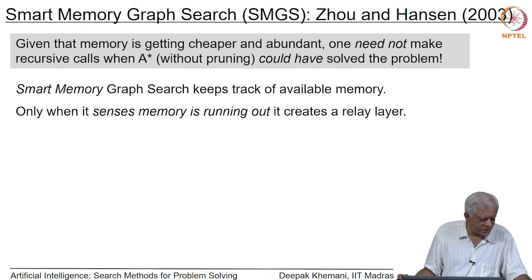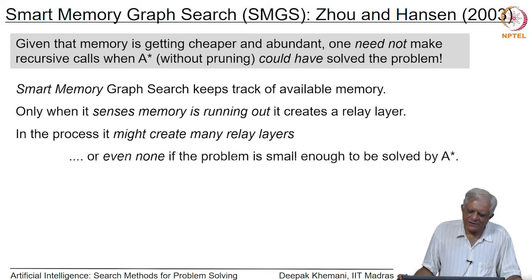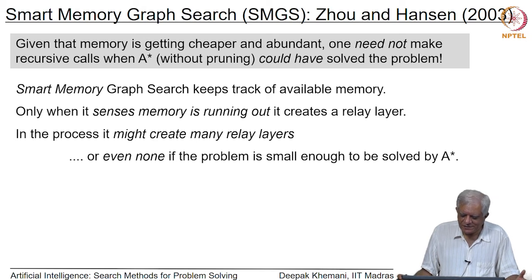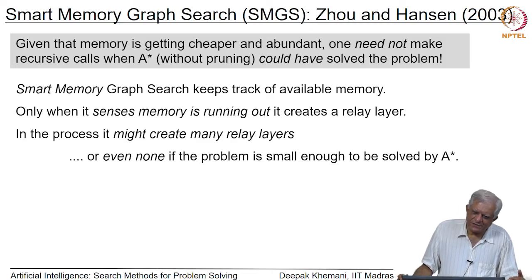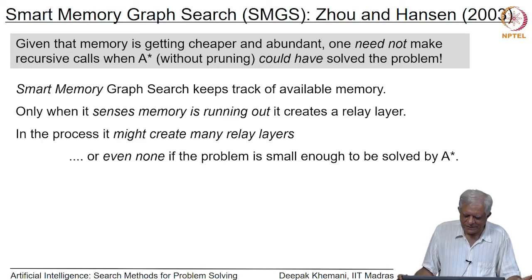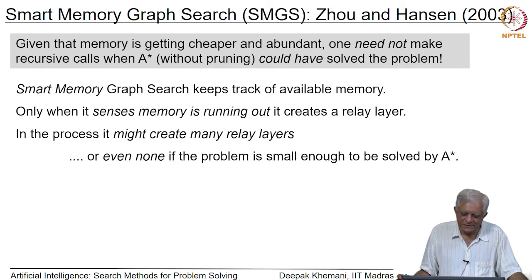Because it is aware of how much memory it needs, it may create more than one relay layer if it is solving a very large problem. On the other hand, if the problem is small enough to be solved within the available memory, it may not create a relay layer at all and just finish solving it like A* would. This flexibility is where the name Smart Memory Graph Search comes from.